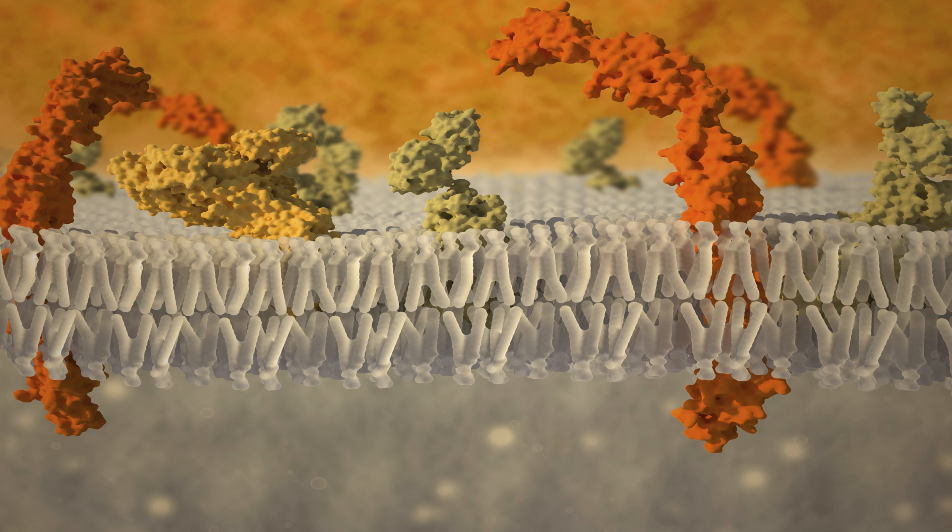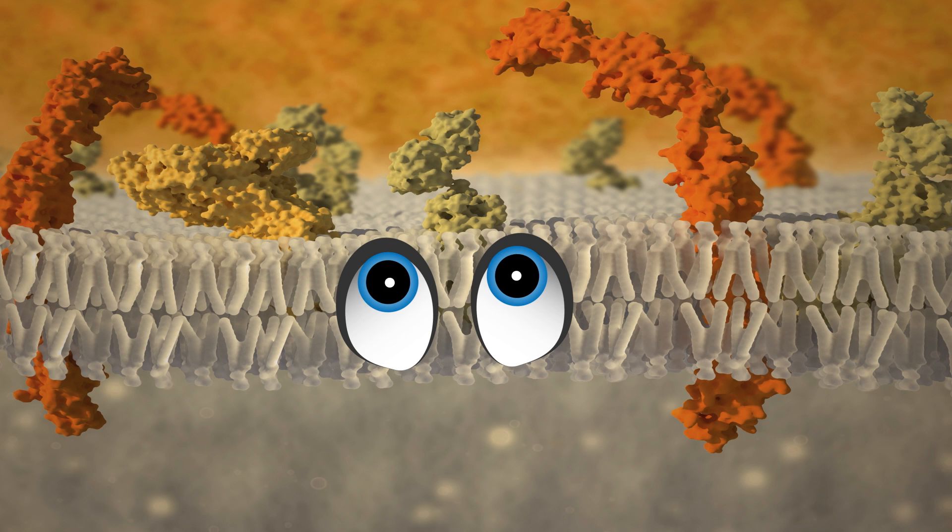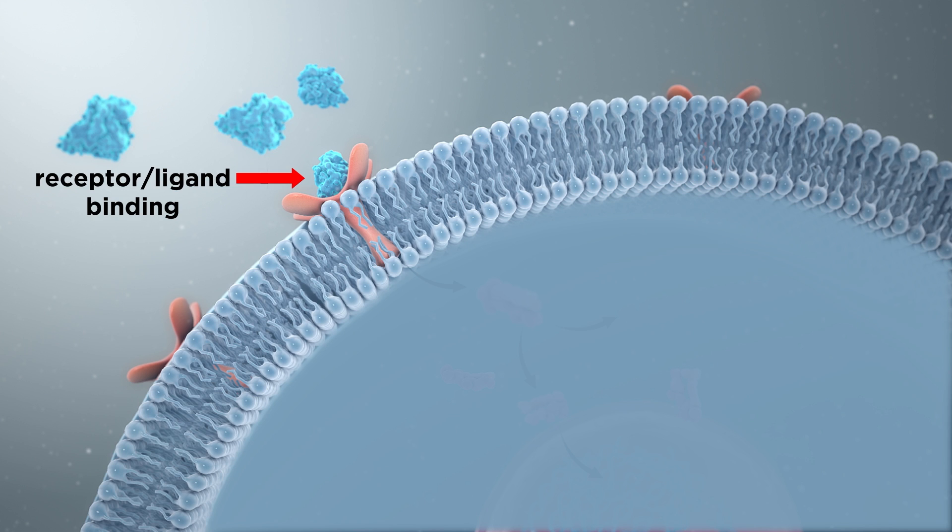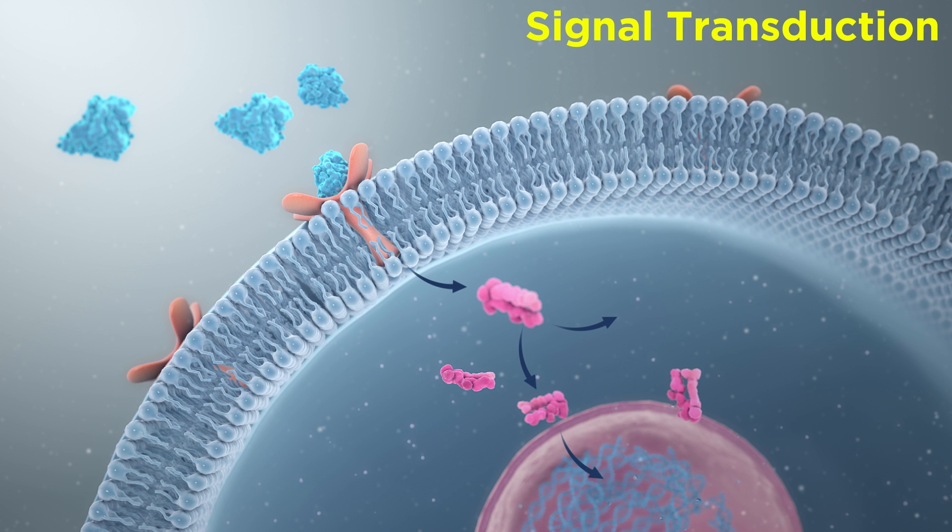By expressing a diverse repertoire of receptors, a cell is armed with the ability to see, so to speak, many different molecules that carry important information for immune cells. Next, after a receptor binds to its extracellular ligand, how does it translate that binding event into meaningful intracellular activity?